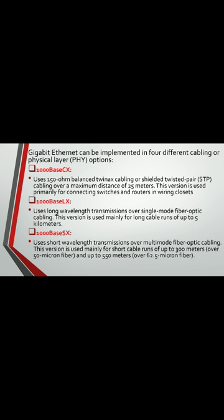Gigabit Ethernet can be implemented in four different cabling or physical layer options. The first is 1000Base-CX, which uses 150-ohm balanced twin-axial cable or shielded twisted pair (STP) cabling over a maximum distance of 25 meters. This version is used primarily for connecting switches and routers in wiring closets.